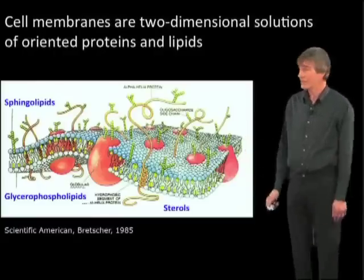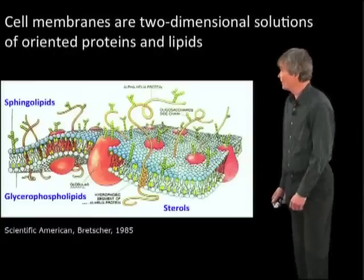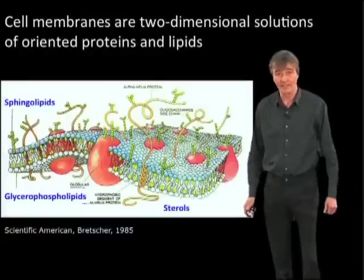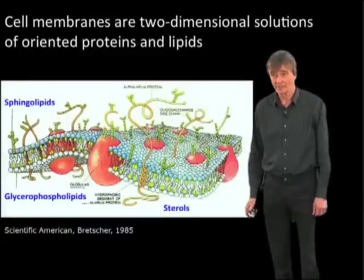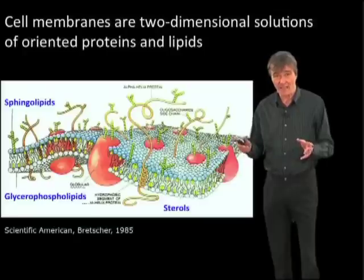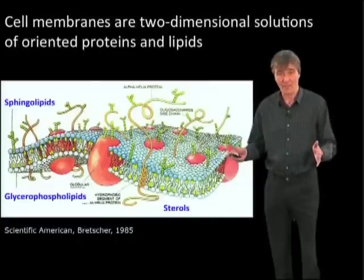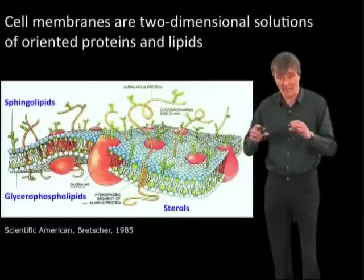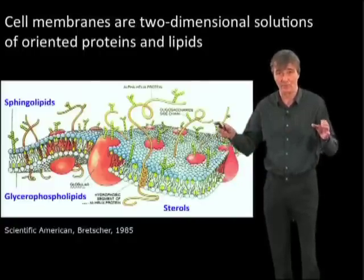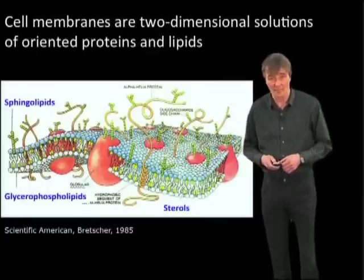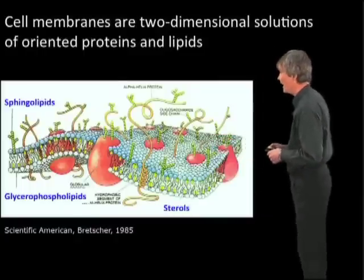Cell membranes are two-dimensional dissolutions of oriented lipids and proteins. The matrix is made of the cell lipid bilayer — cell membranes are made out of lipids — and then there are proteins embedded in the bilayer.